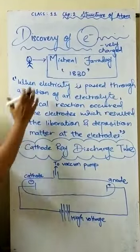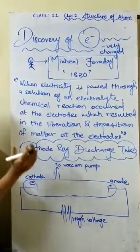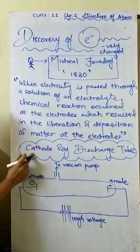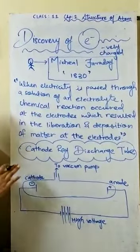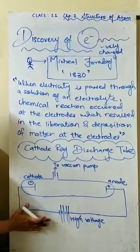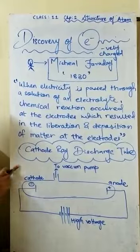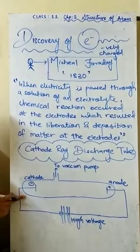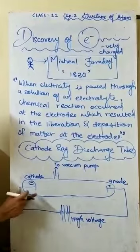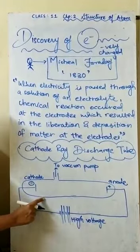Yahan humain majorly electron ki baat karni hai — discovery of electron. Kaunsa aise apparatus tha jisse humain pata chala ke electron discover hua? That apparatus is drawn over here, and it is known as the cathode ray discharge tube.